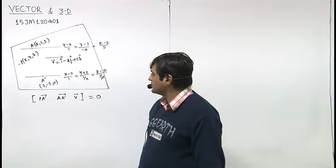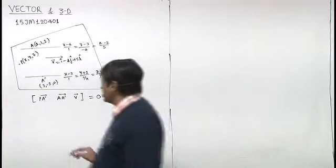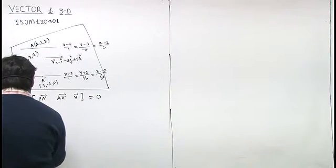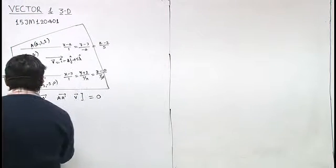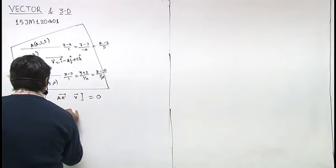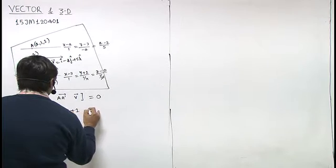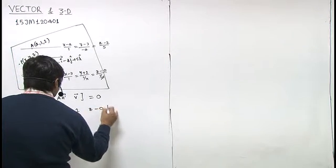So kye three ho a ki plane mein hain. Vector P a dash, isko determini ki form mein meh leluhun. That is positional vector of P minus positional vector of a dash, that will be x minus 3, y plus 2 and z minus 0, right.